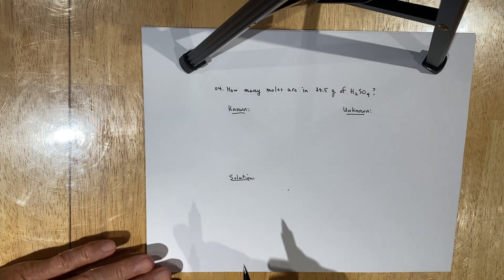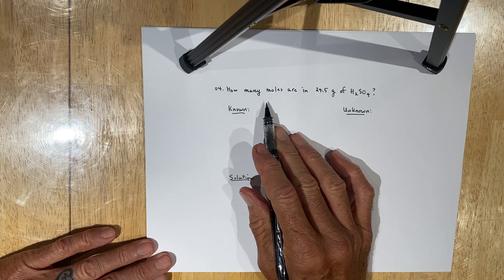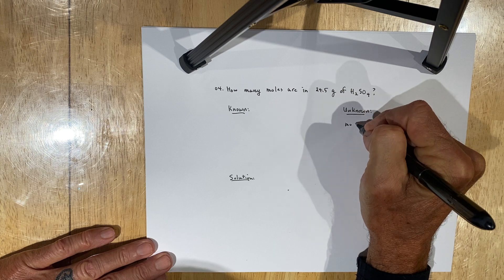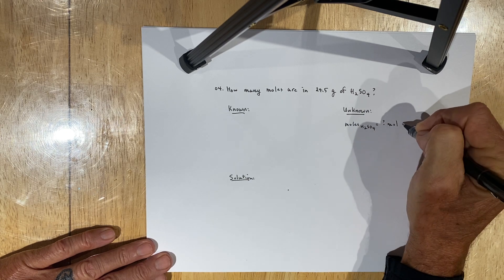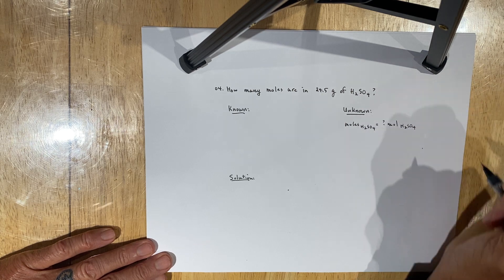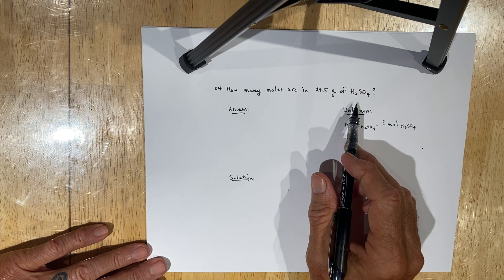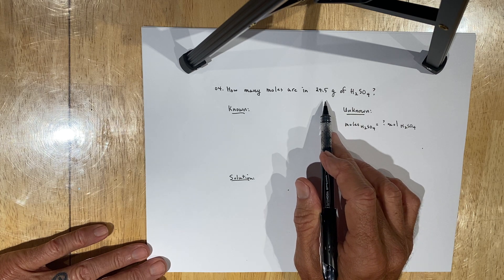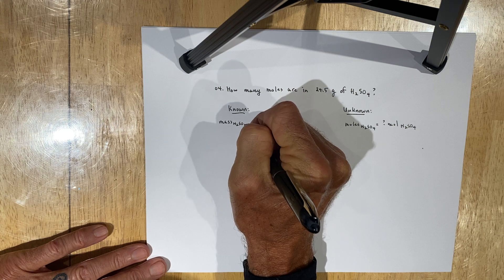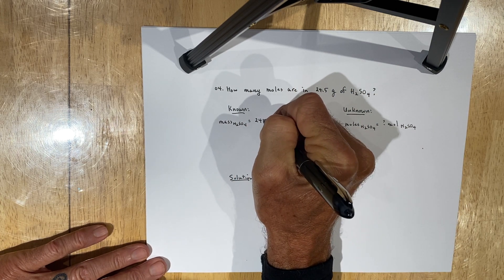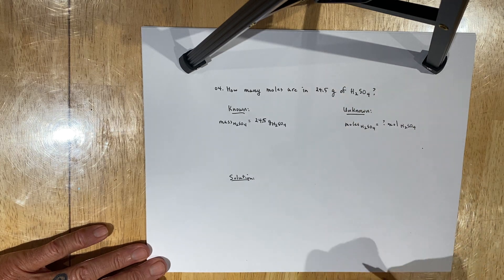We first want to write down in the known-unknown solution style of problem solving those aspects of the problem we're looking for. We're looking for moles of H₂SO₄, given in units of mol of H₂SO₄ — the standard international system unit for quantity of substance. We know that the mass of sulfuric acid given is equal to 24.5 grams of H₂SO₄.